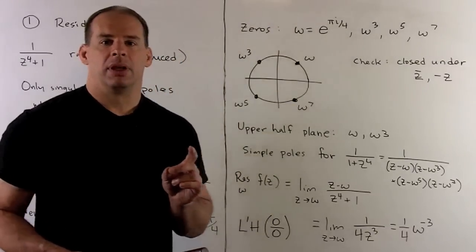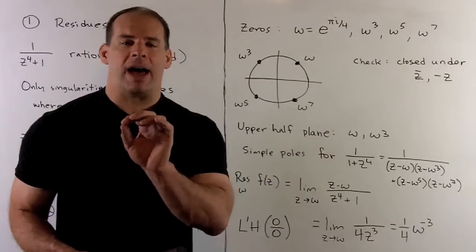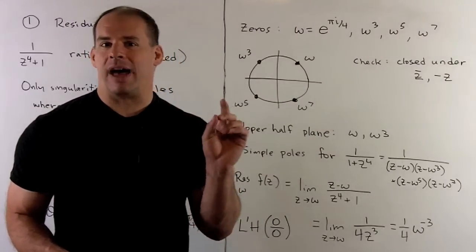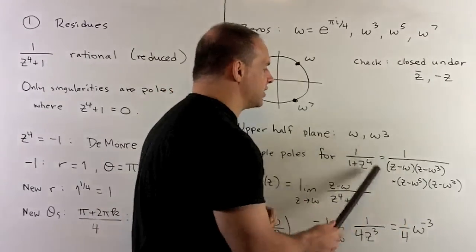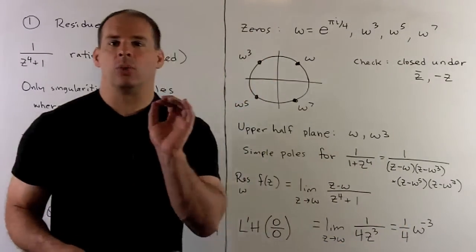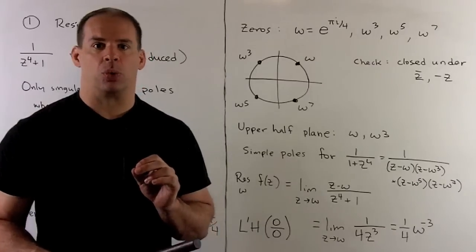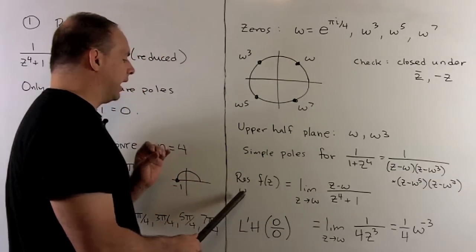Now, to get the residues, you could multiply by, say, z minus omega, and then evaluate at omega, and that's perfectly fine. But, you notice that's going to be a little bit messy. So, a cleaner way to do this is to use L'Hôpital's rule. So, if I want the residues, say, at omega, what do we do?